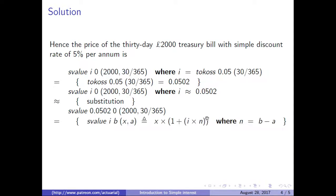Then using the definition of S value, we get 2000 times 1 plus 0.0502 times negative 30/365.